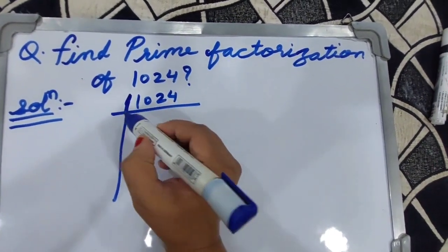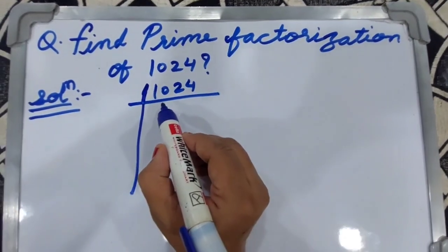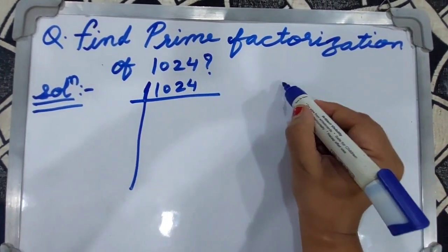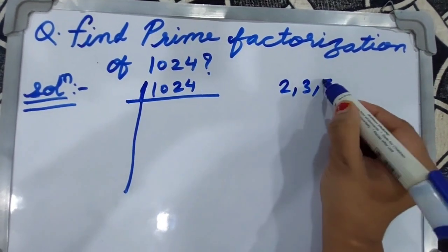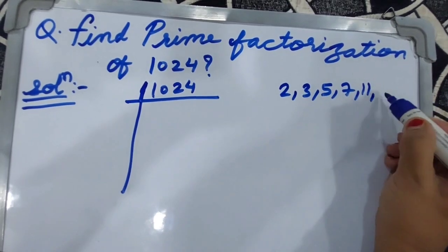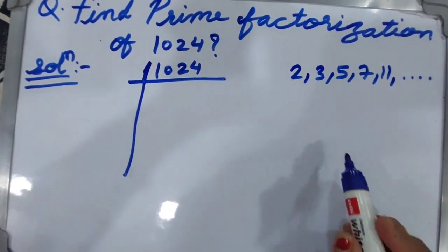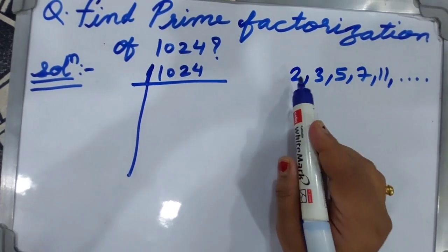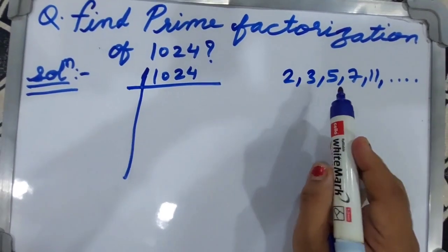First we look at the prime numbers. What are prime numbers? Prime numbers are 2, 3, 5, 7, 11, etc. Prime numbers are numbers which are divisible only by the number itself and by one.